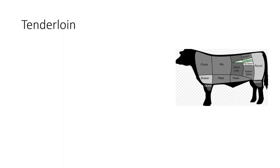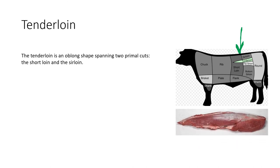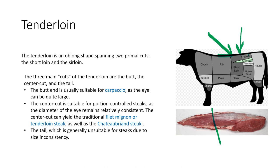The tenderloin is below the sirloin and short loin and is the most prized part of beef. A tenderloin can weigh up to 2 to 2.5 kilos. There are three parts: the butt end (the larger end), the center cut (the middle section), and the tail (the thin pointed end). The tip of the tenderloin is towards the short loin, and the broader end extends under the sirloin.